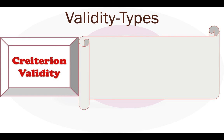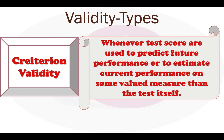Finally, criterion validity. Criterion validity evidence tells us how well a test corresponds with a particular criterion. Criterion validity includes both predictive validity and concurrent validity. A test may be validated against as many criteria as there are specific uses for it.